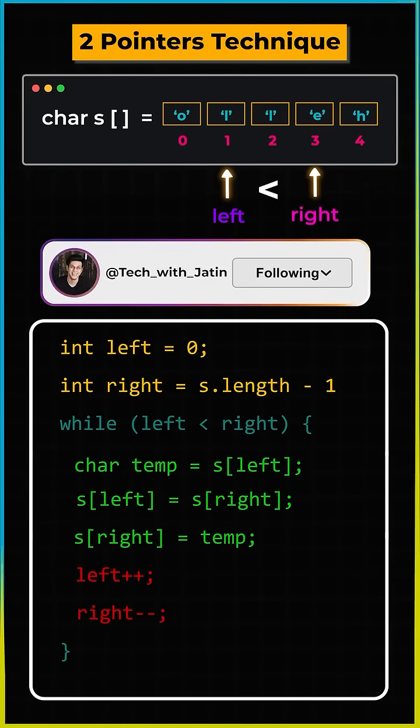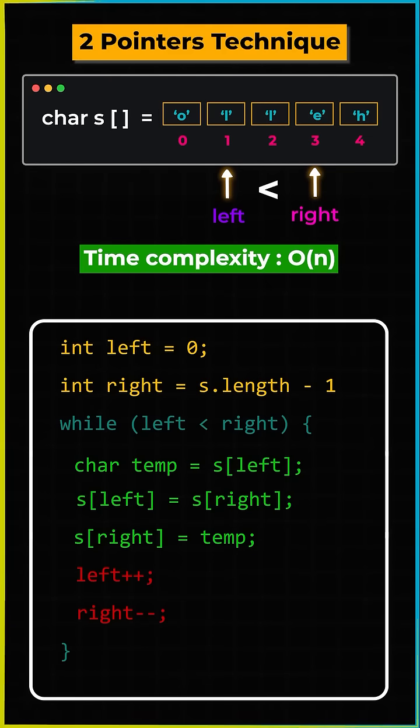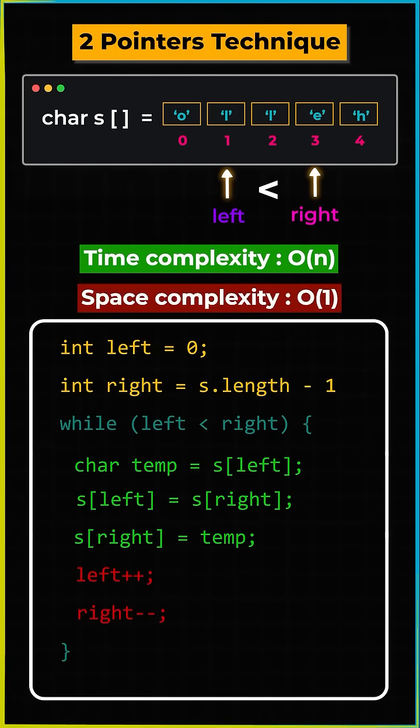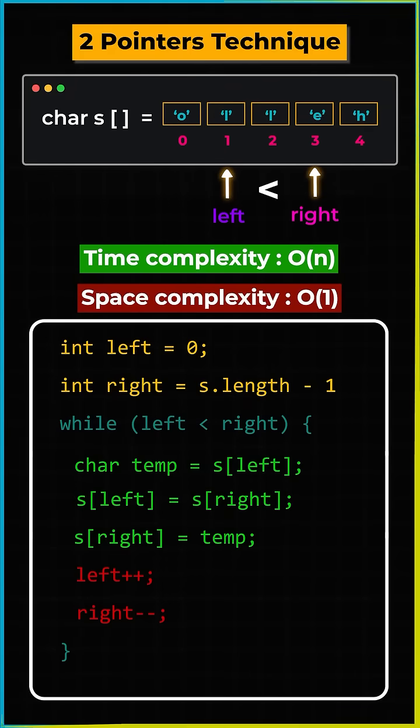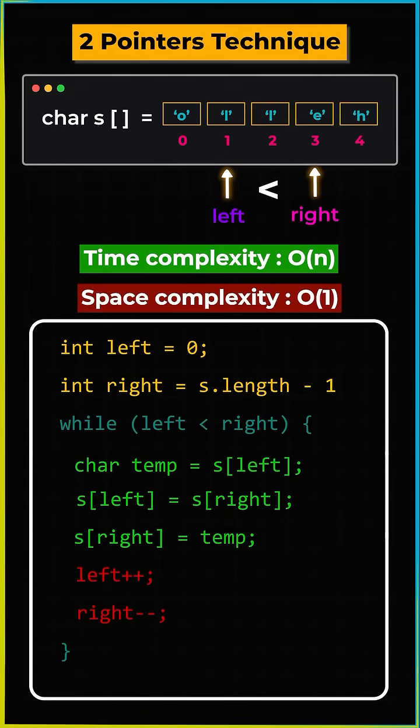The given two-pointer approach for reversing a character array has a time complexity of O(n) and the space complexity would be O(1), which means it does not require any additional space that grows with the input size.